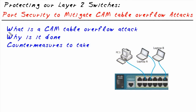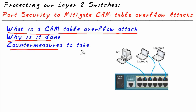In this micro nugget, we've looked at what a cam table overflow attack is — flooding so many MAC addresses that the switch can't keep track of where devices live. It's done to eavesdrop on traffic that you otherwise wouldn't see. The countermeasure is port security, which limits the number of MAC addresses the switch is willing to learn on a port before taking action. I hope this has been informative, and thank you for viewing.